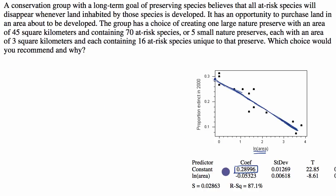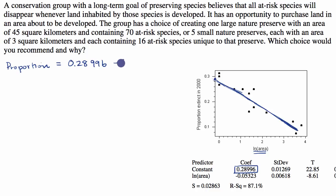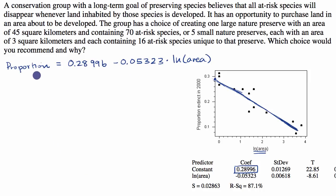The regression line tells us that in general the proportion extinct is equal to the y-intercept 0.28996, minus 0.05323 times — and we have to be careful here — not times the area, but times the natural log of the area. We can use this equation for both scenarios to think about what proportion we would expect to go extinct in either situation.